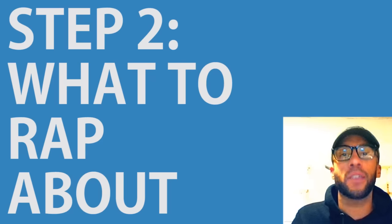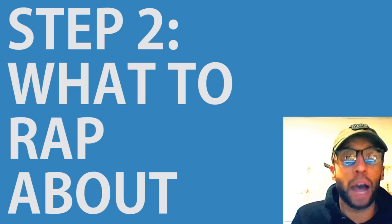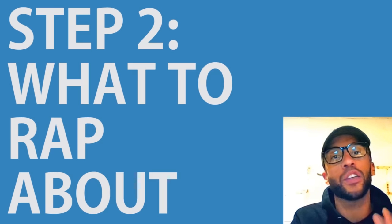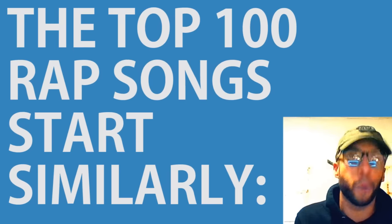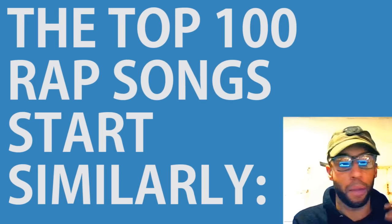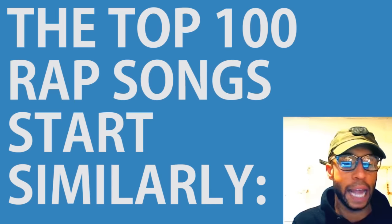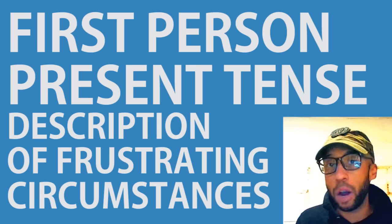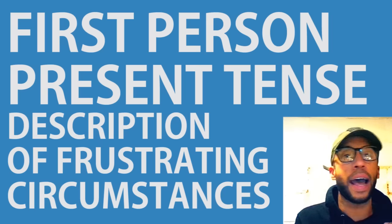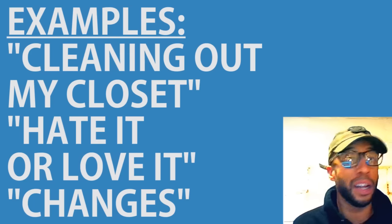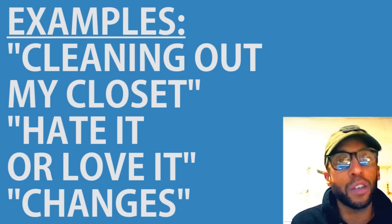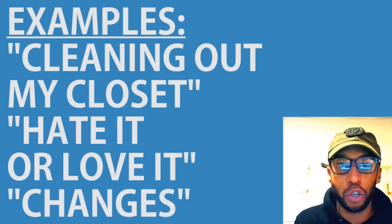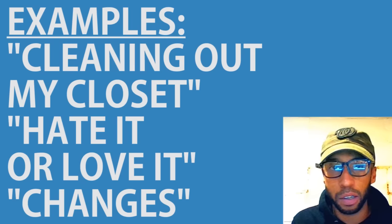Now that you've got your writing materials, we have to decide what to rap about. There's a million things you can rap about, but just to get you writing and get in the flow, we've researched what the most common ways of starting a verse are, according to the top 100 rap songs on Google. What we found is there's a common theme among the Eminems, the Tupacs, the 50s — and that is first person, present tense, description of frustrating circumstances: the struggle, difficult times. That's how Cleaning Out My Closet by Eminem starts, how Hate It or Love It by 50 Cent starts, how Changes by Tupac starts. Pause the video, choose one of these themes around frustrating circumstances, and write in first person, present tense.